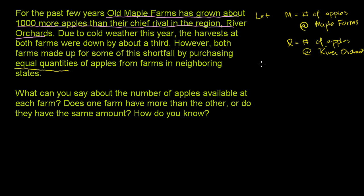We don't know it's exactly 1,000 more. We can just say that in a normal year, Old Maple Farms, which we denote by M, has a larger amount of apples than River Orchards. So in a normal year, M is greater than R, right? It has about 1,000 more apples at Old Maple Farms.